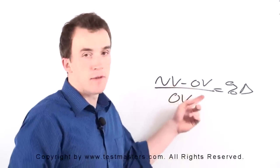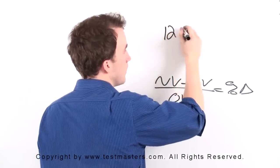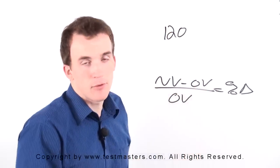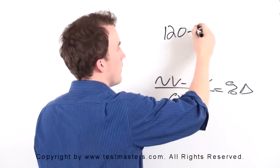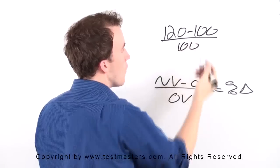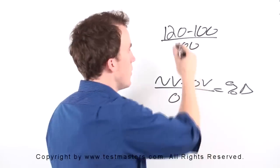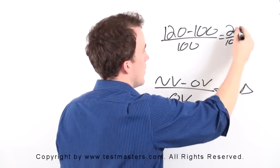We have new value minus the original value over original value. So our new value is $120, because what we sold it for—anytime you sell something for a price or discount it to a price, that's your new value. And your original value here was $100, because of how much I bought it for, over 100, which is the original value again.